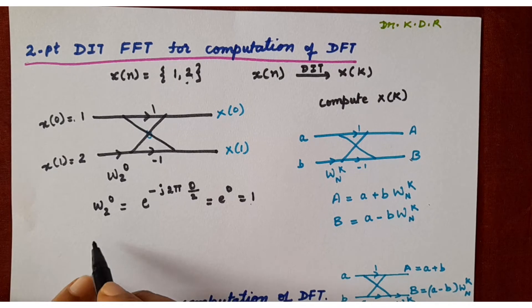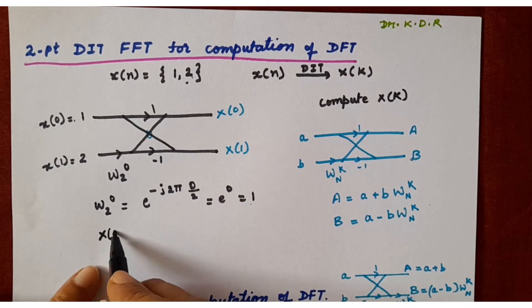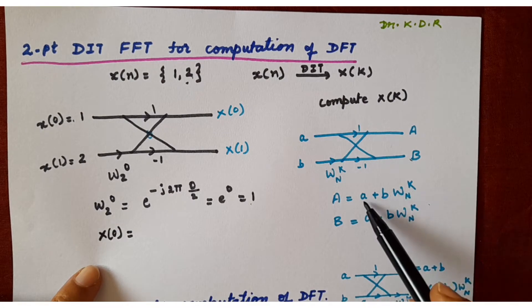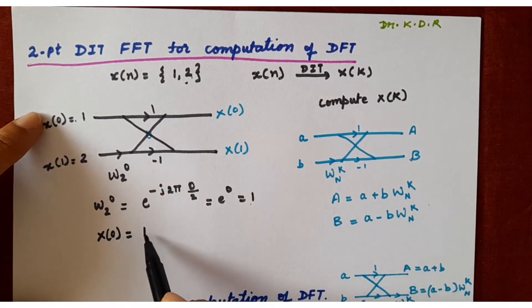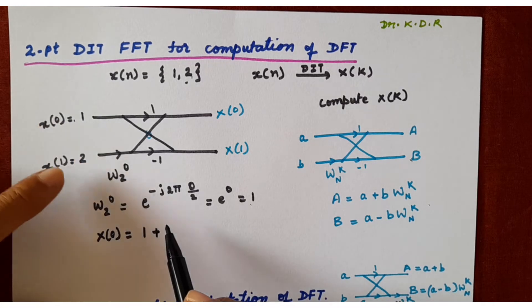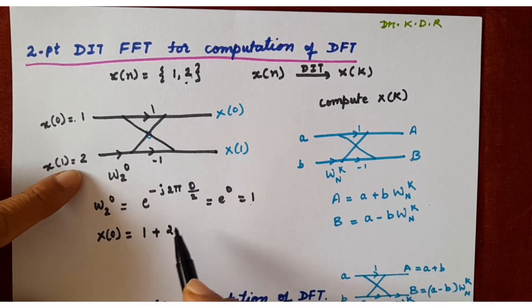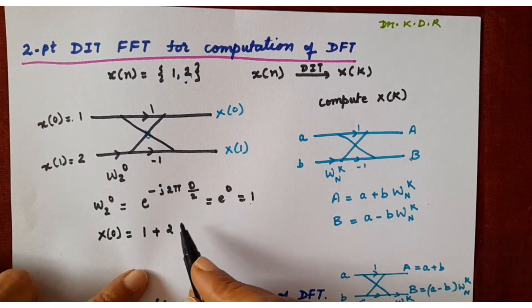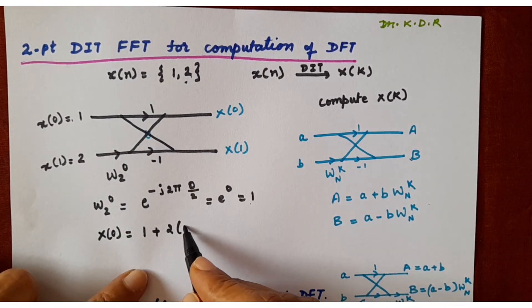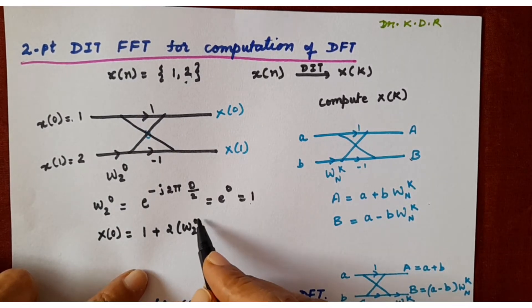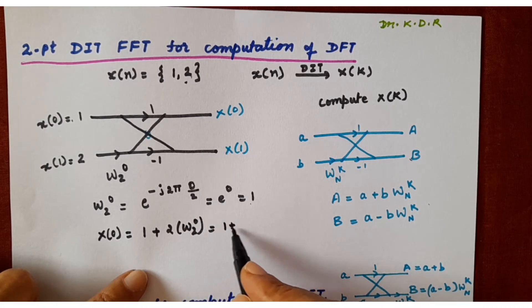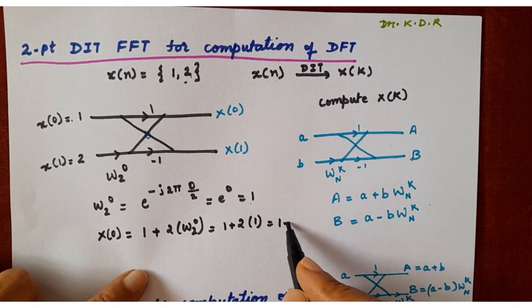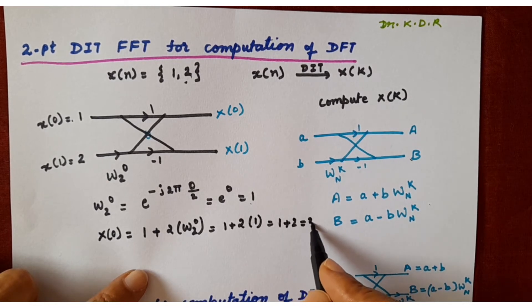The target is to find capital X[0] and capital X[1]. An important note while solving DIT: the twiddle factor is placed at the beginning of the second line, input variables are taken as small x, and output variables are taken as capital X. For capital X[0], using the equation A + B·W_N^K: A is 1, B is 2, and W_2^0 is 1, so X[0] = 1 + 2 = 3.